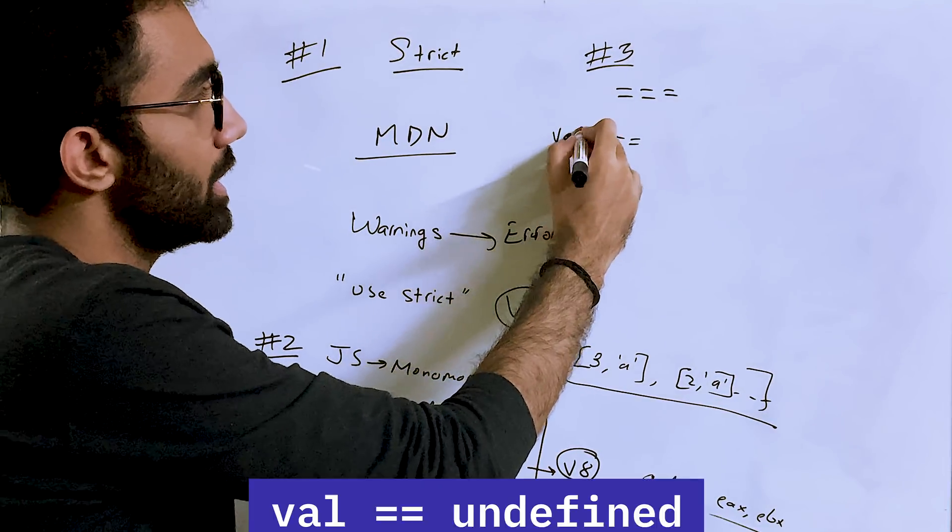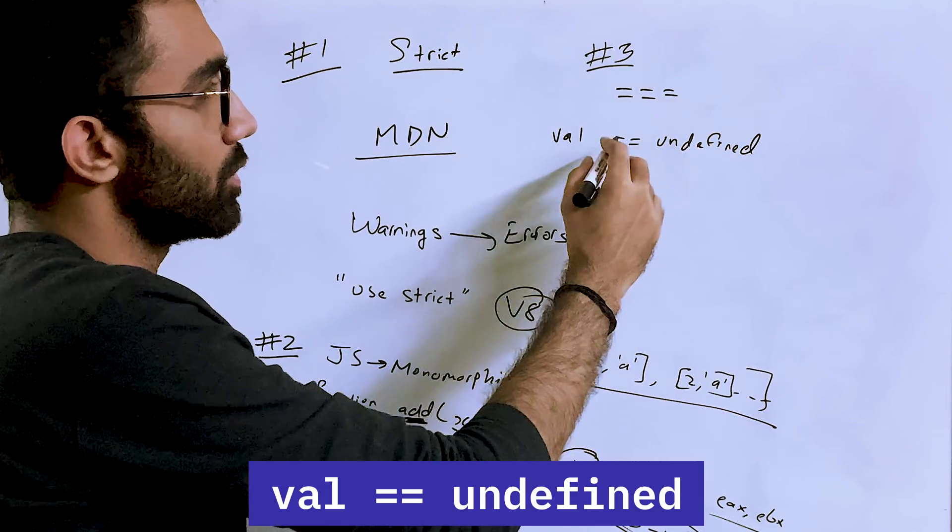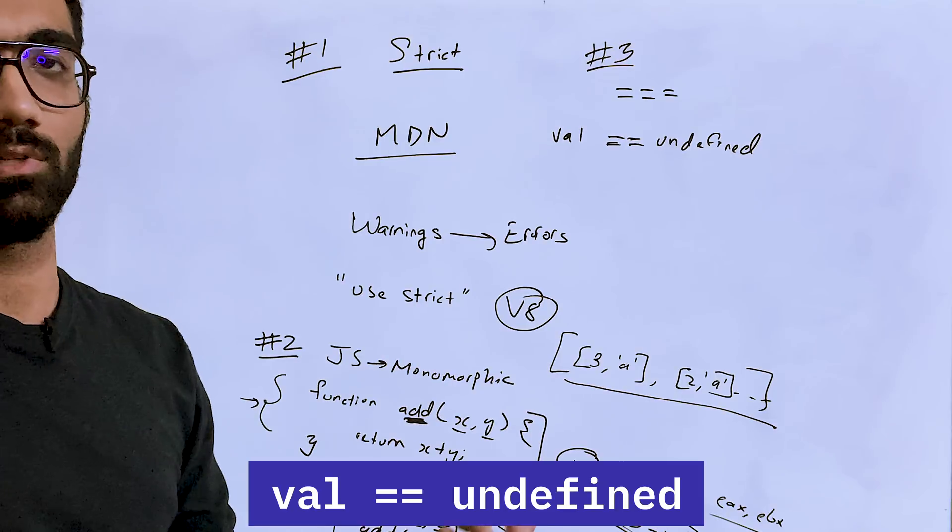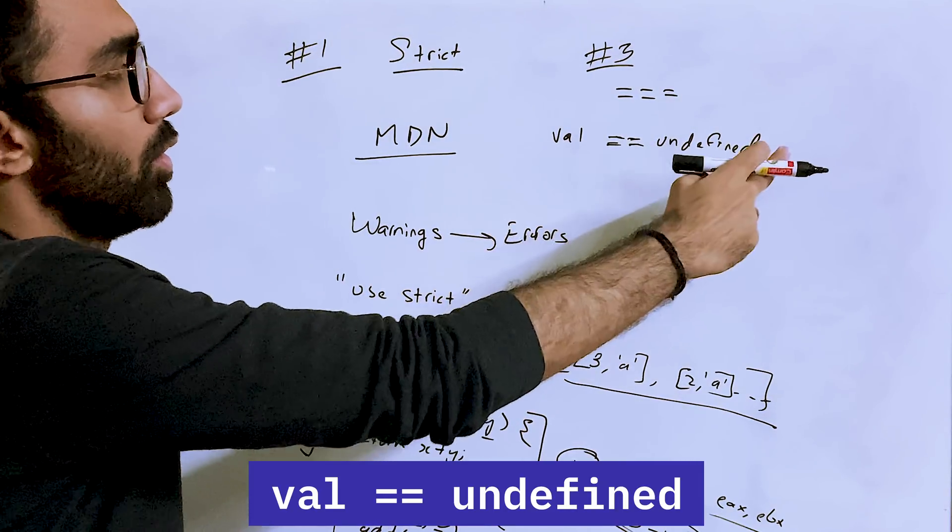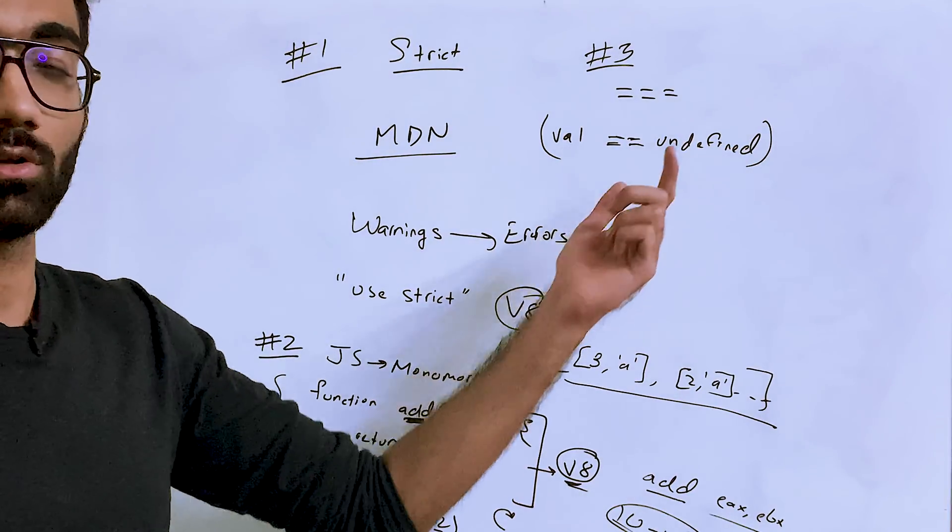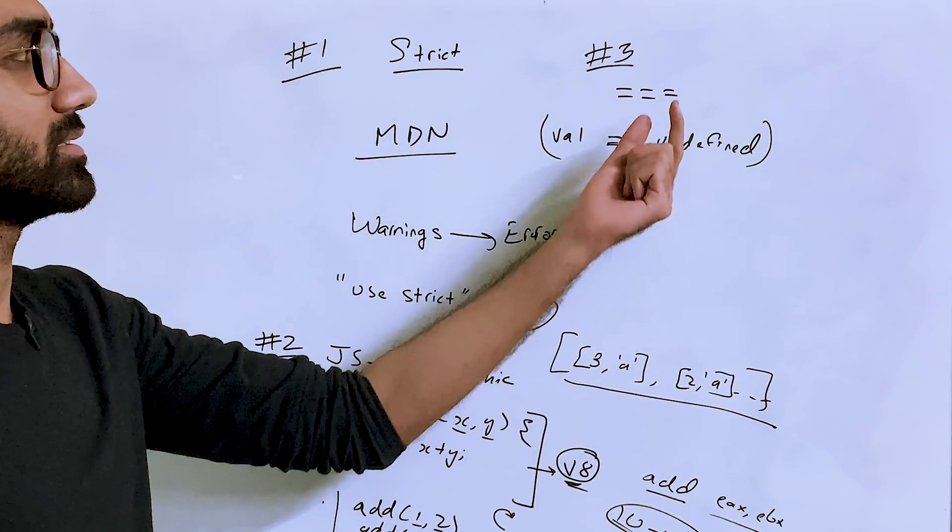Now there is absolutely no reason at all to use double equality in JavaScript, except for only a single reason which I know, which is if you want to compare a variable with both undefined and null together. Because when you use double equality, then undefined and null actually just match in a single statement, so you don't have to do value triple equal to undefined or value triple equal to null.